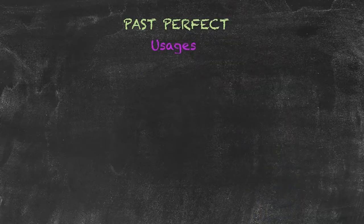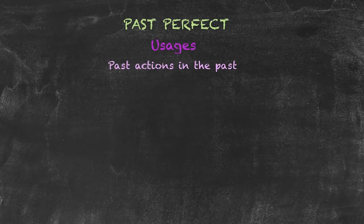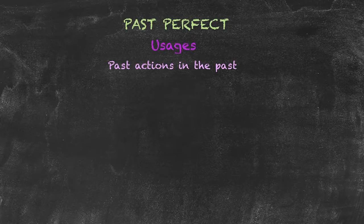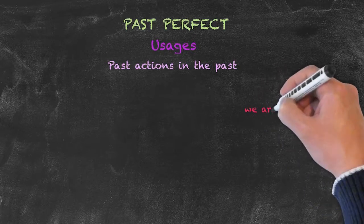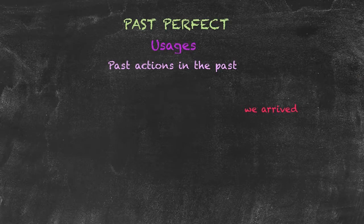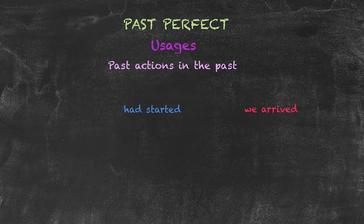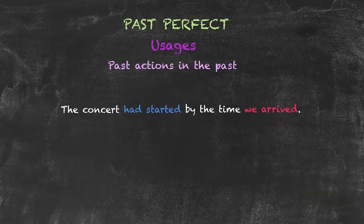As mentioned, the usage for the past perfect is to relate past actions that are in the past. So we always add the past perfect tense for the action that happened before the past action that we're talking about. So I want to say that we arrived in the past, but I also want to let you know that something happened even before we arrived. So I use the past perfect tense, with our auxiliary verb to have conjugated into the past, as well as our past participle form of the main verb. The resulting sentence could be something like, The concert had started by the time we arrived.